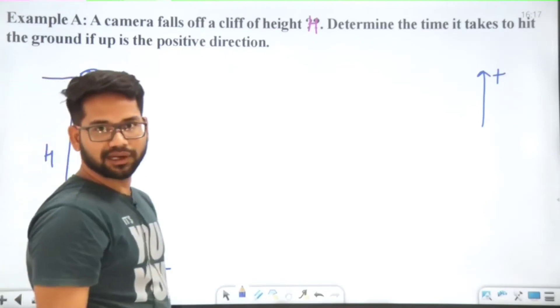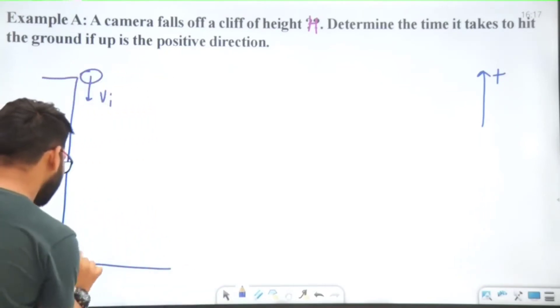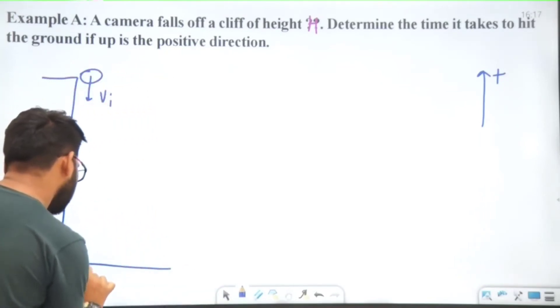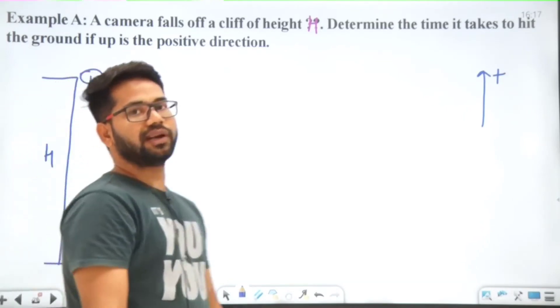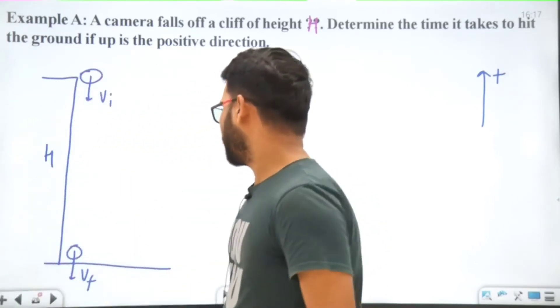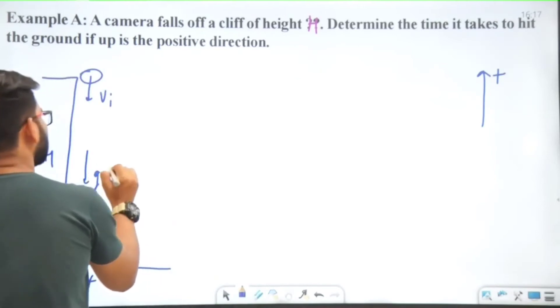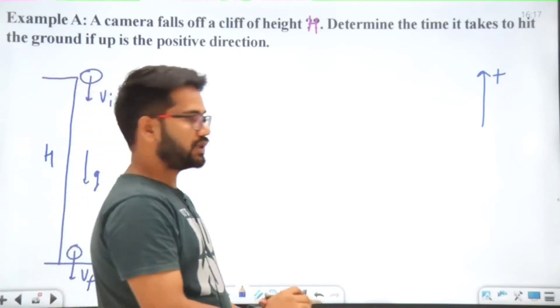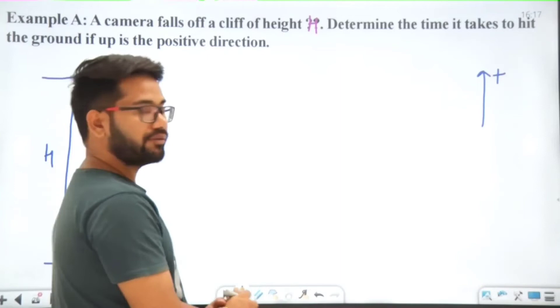When it's going to collide with the ground, its velocity is VF, and a constant acceleration downward, G, is acting on it. The displacement from initial to final position is Delta Y.